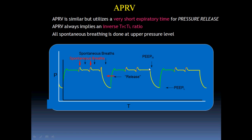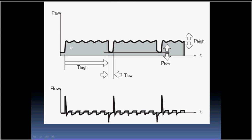The main targets of APRV are: number one, to keep the alveoli open; and at the same time, to avoid injury to the alveoli. Instead of the alveoli opening and collapsing repeatedly, which produces shear force leading to damage to the lung, the alveoli are maintained open. The high CPAP is P-high and the low level in this case is P-low.